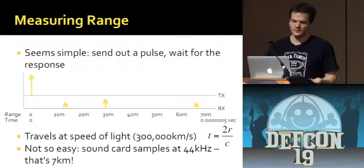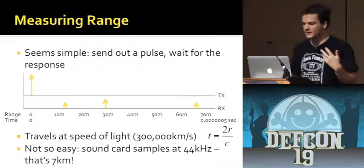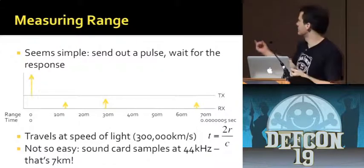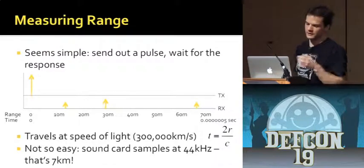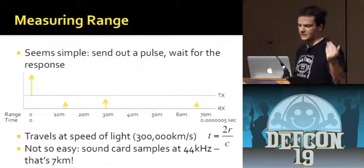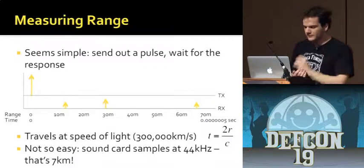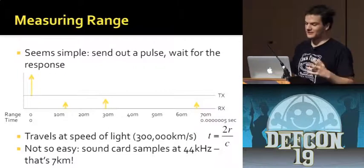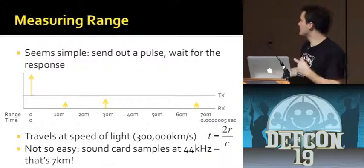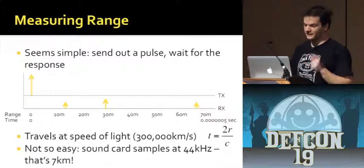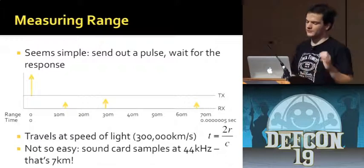If we want to measure range, it seems pretty simple — send out a pulse and time how long it takes to come back. The time is two times the distance divided by the speed of light. At 70 meters, that's about 500 nanoseconds — which is pretty hard to measure easily. If you're using a sound card to sample, that 44 kilohertz sample rate corresponds to a seven-kilometer distance, which probably won't work for most systems.